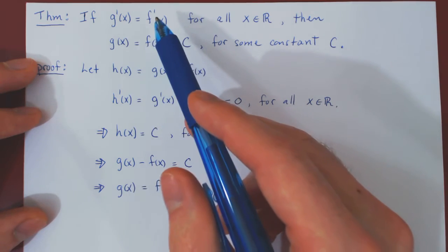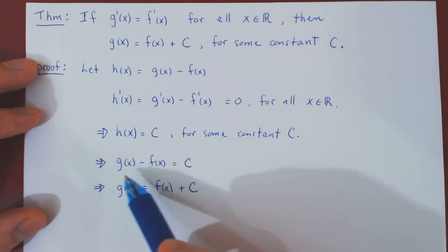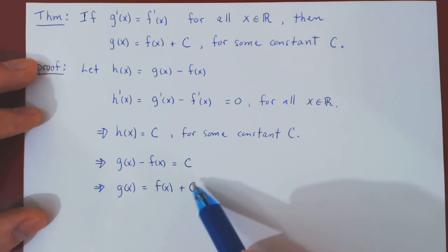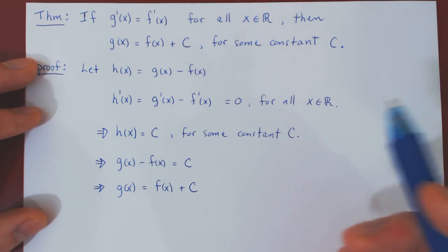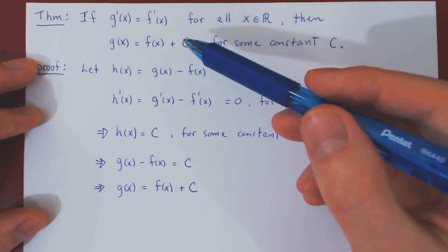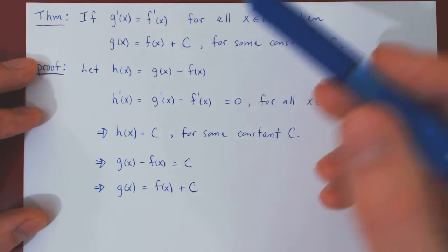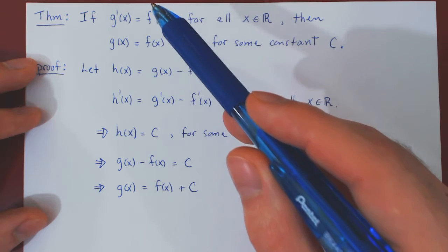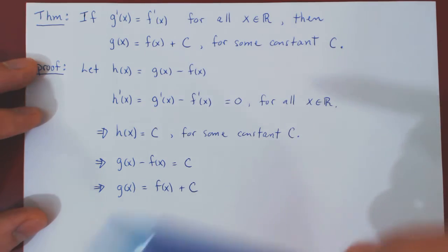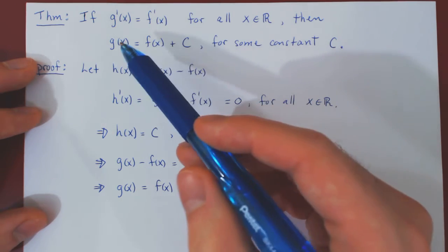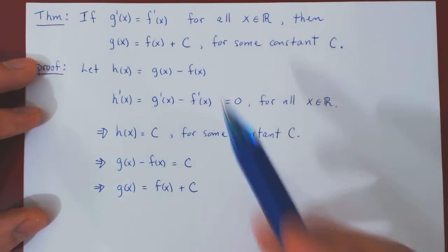If two functions have the same derivative, then one function must be a vertical translation of the other. So let's look at this graphically. And again, the way you should remember this is that the derivative determines completely the shape of the curve of a function up to a vertical translation.